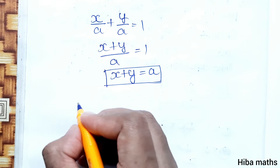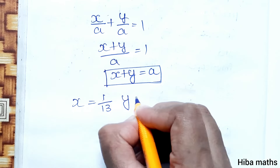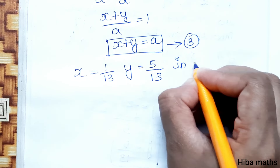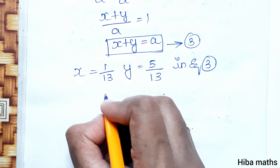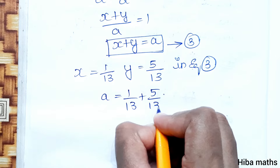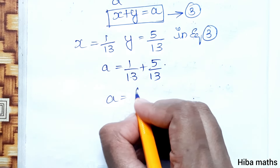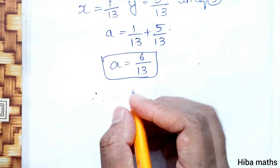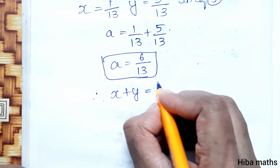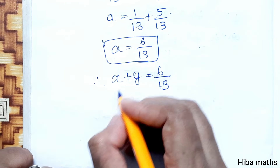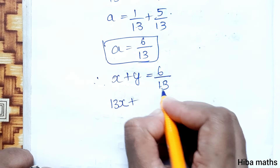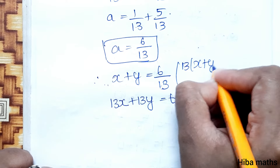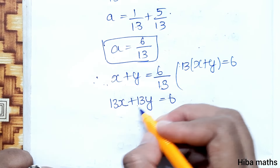The equation is x + y = a. Now substitute the intersection point x = 1/13 and y = 5/13 into this equation. So a = 1/13 + 5/13 = 6/13. Therefore the equation becomes x + y = 6/13, which gives 13(x + y) = 6, or 13x + 13y = 6.